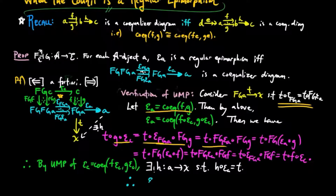And therefore, we see that epsilon A is equal to the co-equalizer of epsilon FGA and FG epsilon A, which is what we wanted to show.